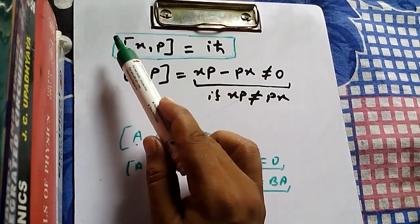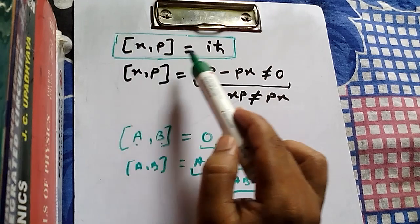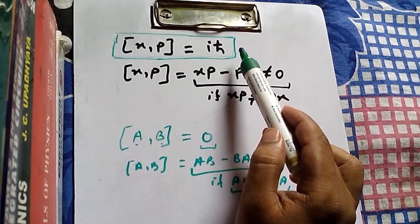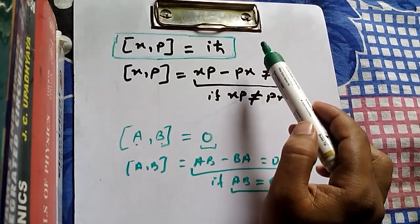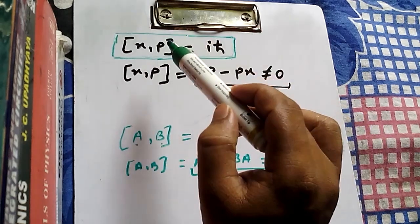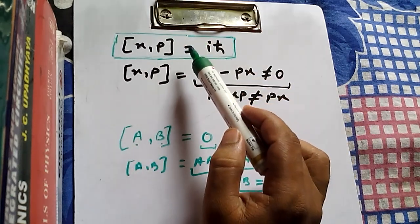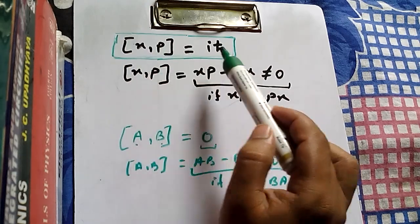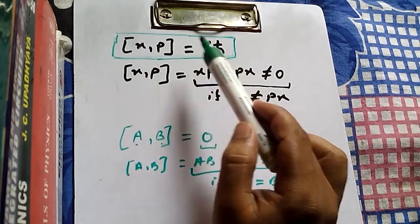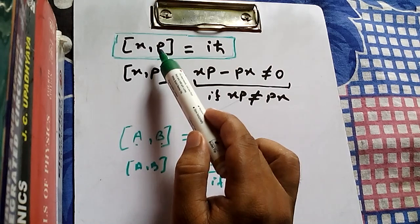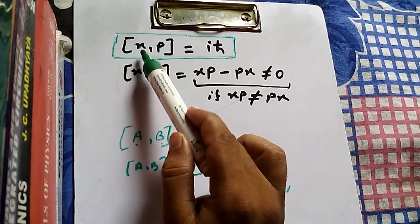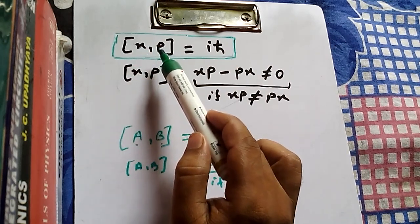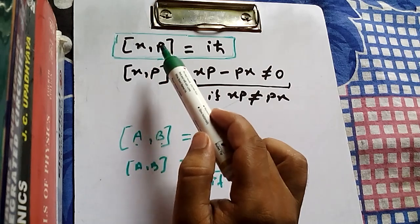Not commuting means you cannot find the position and momentum of a particle simultaneously. So this commutation relation actually tells you about the Heisenberg uncertainty principle. Whenever the commutation of two operators gives a nonzero value, those two operators cannot be measured simultaneously for a given eigenfunction.